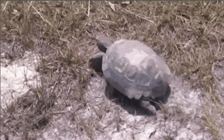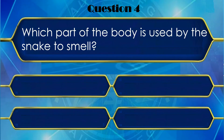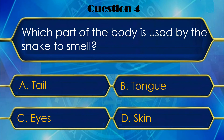Now let us move to your next question. And your fourth question is: Ek saanp sunghne ke liye apne body ka kaun sa part use karta hai? And your options are: A. Tail, B. Tongue, C. Eyes, or D. Skin.